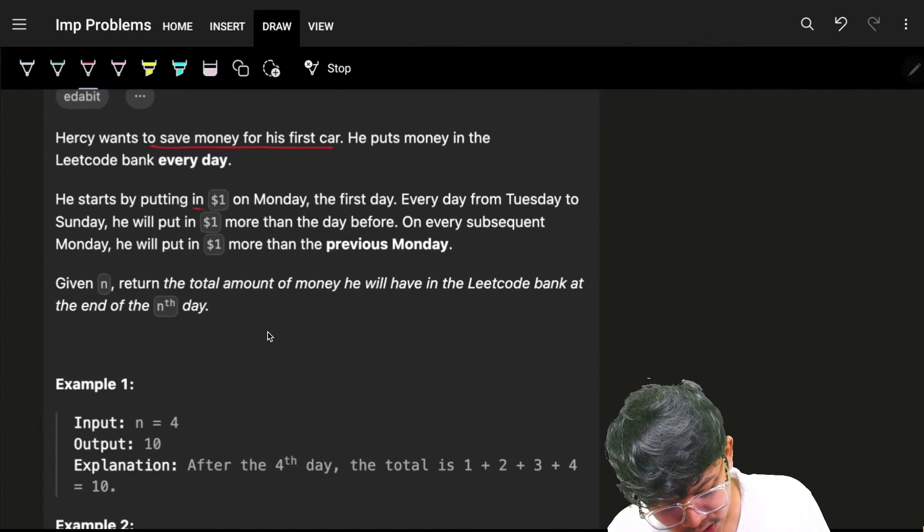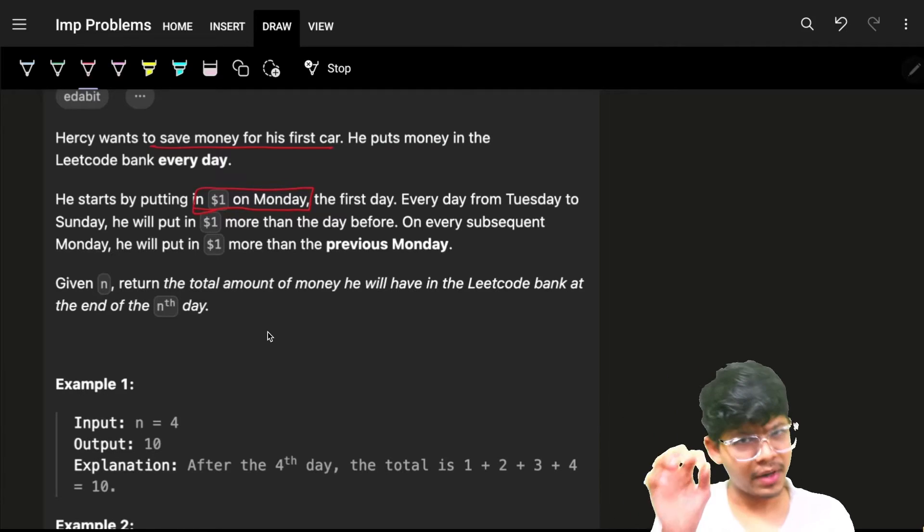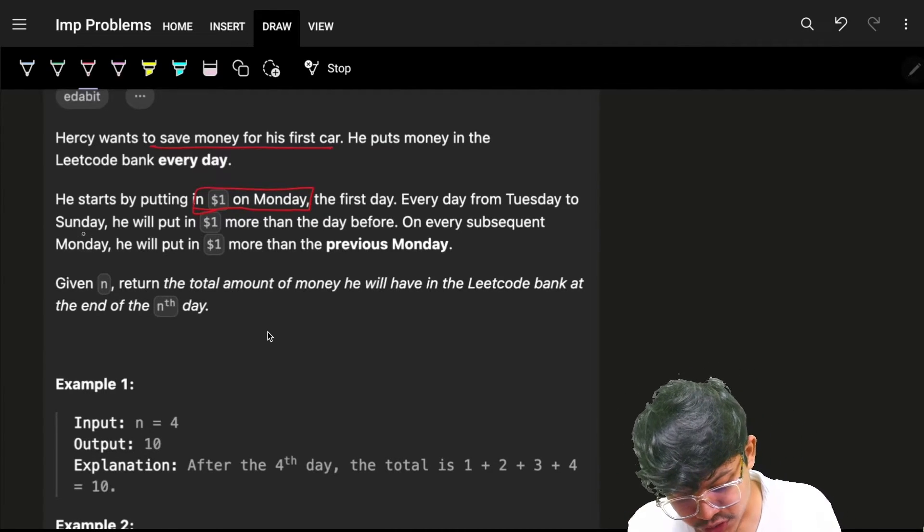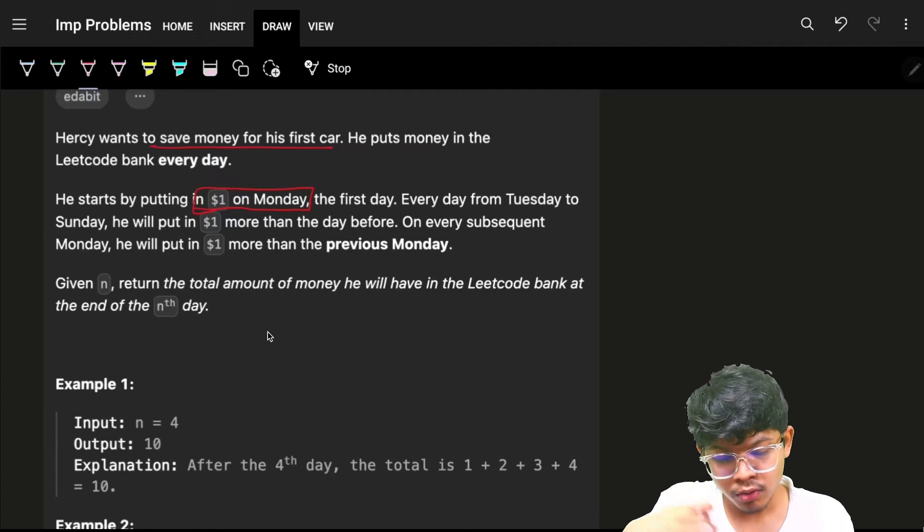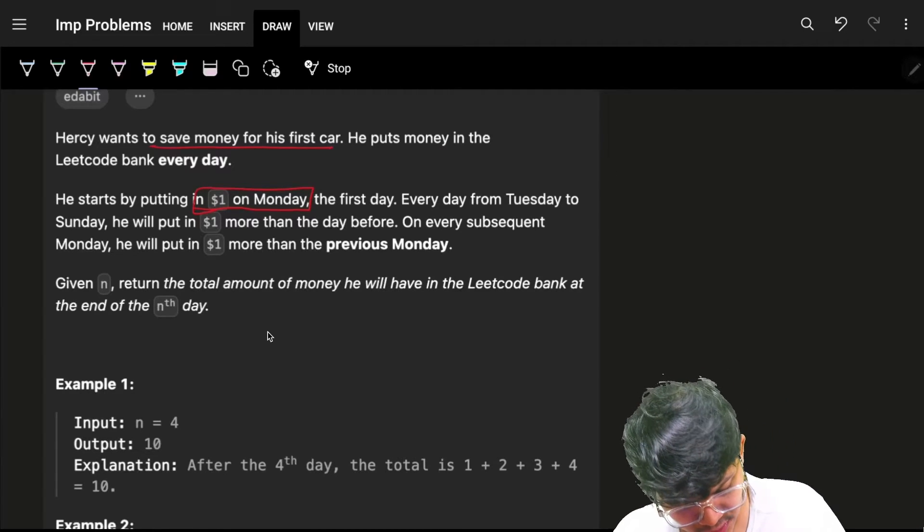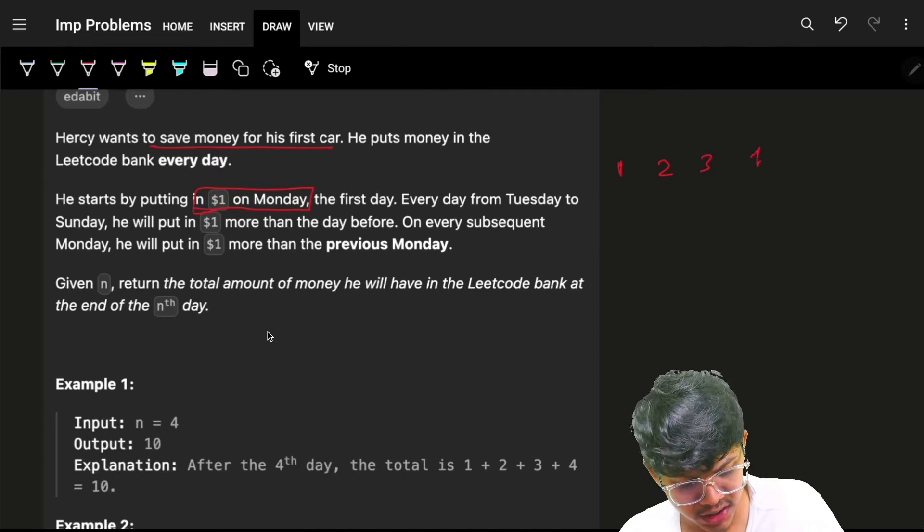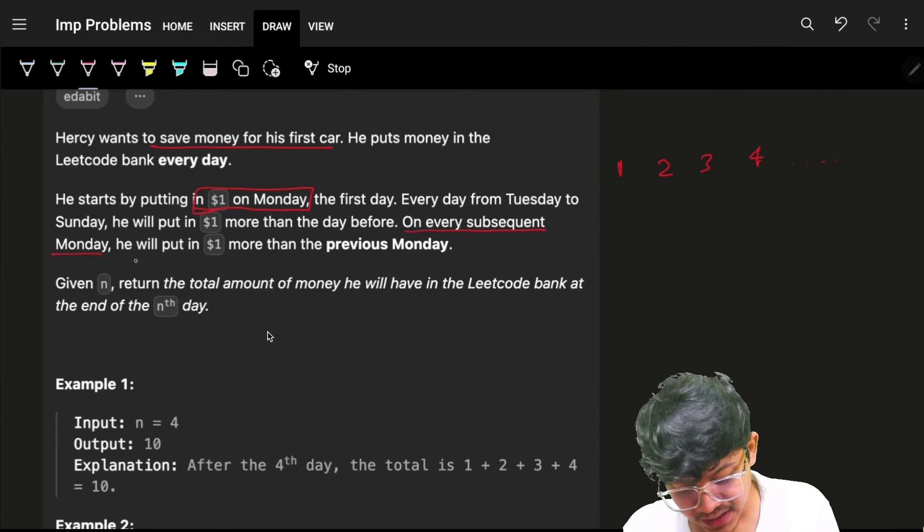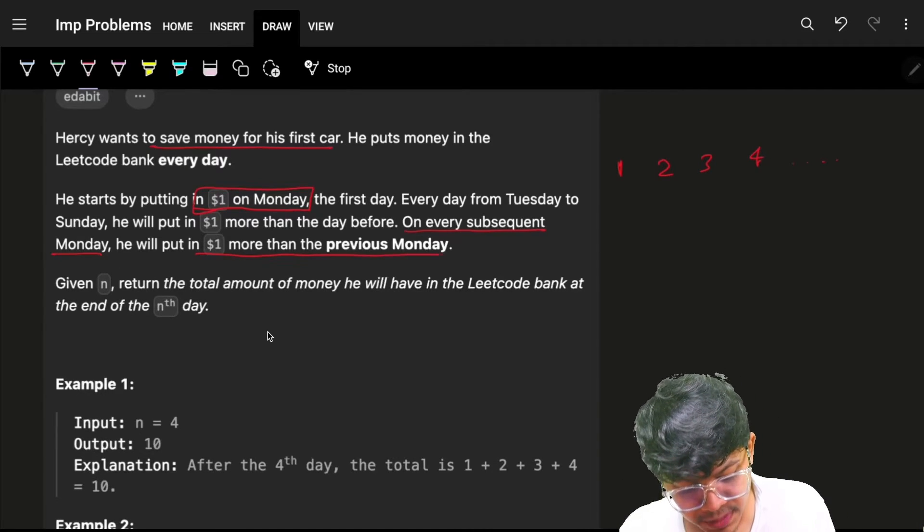He starts by putting $1 on Monday, the first day. Every day from Tuesday to Sunday, he will put in $1 more than the day before. On every subsequent Monday, he will put one more than the previous Monday.